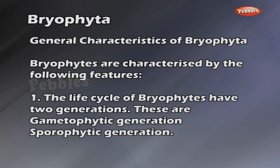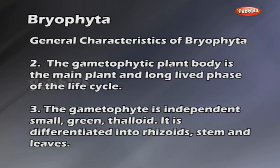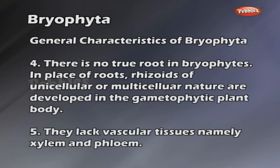Bryophytes are characterized by the following features. The life cycle of bryophytes has two generations: the gametophytic generation and the sporophytic generation. The gametophytic plant body is the main plant and long-lived phase of the life cycle. The gametophyte is an independent small green thalloid, differentiated into rhizoids, stem and leaves.